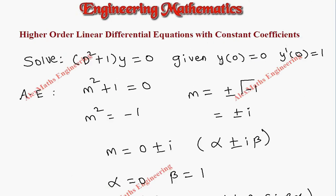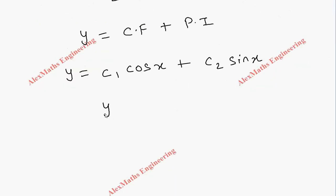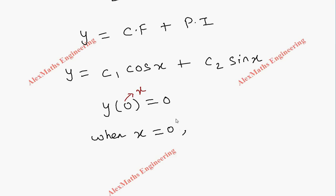They gave a condition: y(0) = 0. This means when x = 0, y = 0. This value represents x, so when x is 0, y is 0. This is the condition.